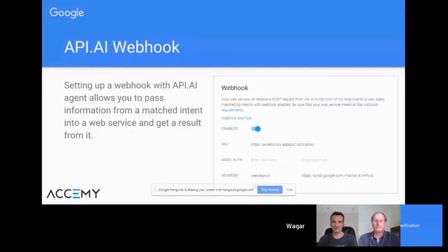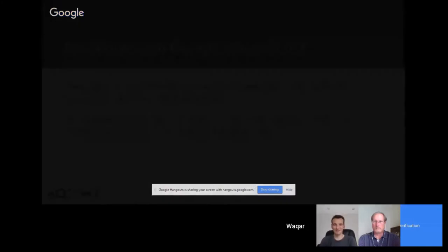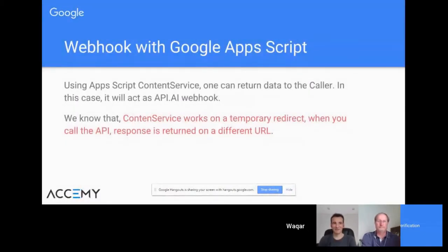In API.ai, we use webhooks to integrate the API.ai agent with third-party services. When you set up an API.ai webhook, it allows you to pass information from the matched intent into a web service and get a result back from it. In this case, we will use a Google Apps Script web app as that web service with the API.ai webhook.